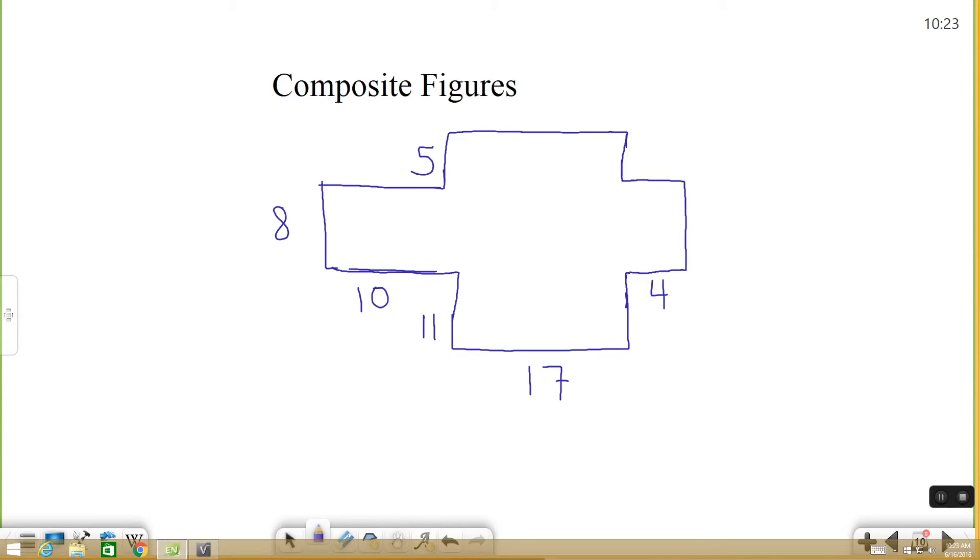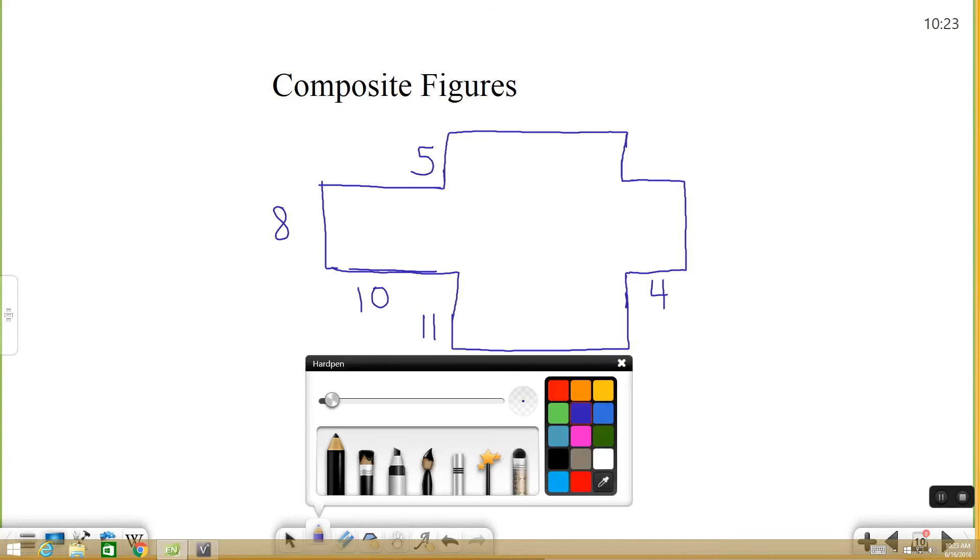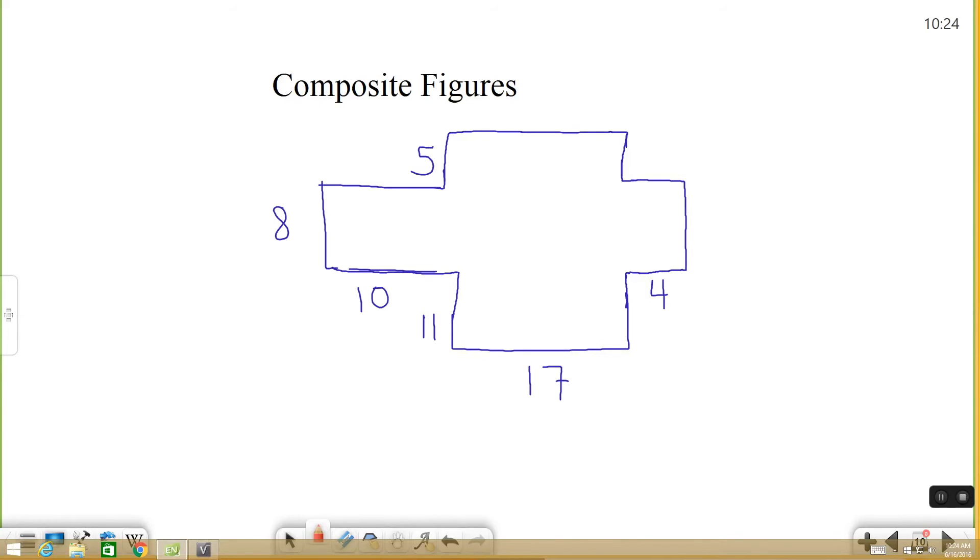So when I see a composite figure like this what I like to do is break it up into individual pieces and then add them all together. So for example I might take and draw a line here and here and kind of just break it up into five different pieces. Left, right, top and bottom, and then the middle. Then I can figure out the lengths of each individual piece and add them all up.